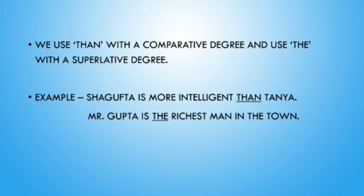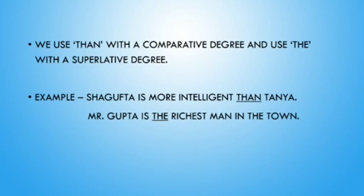The next example is: 'Mr. Gupta is the richest man in the town.' In this sentence, 'richest' is the superlative degree of the adjective. To write the superlative degree, it is compulsory to add the article 'the' before the superlative degree. That is why in the sentence it is written 'Mr. Gupta is the richest man in the town.' So 'the' is always added with the superlative degree and 'than' is always added with the comparative degree.